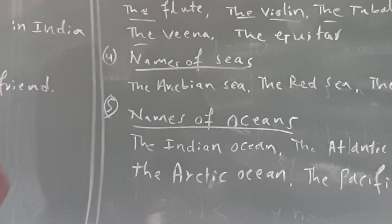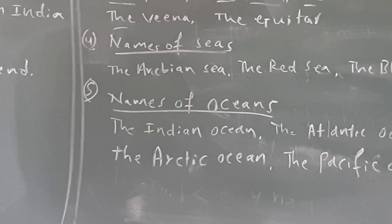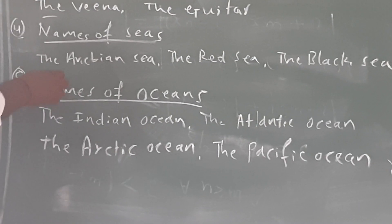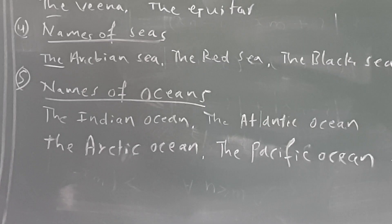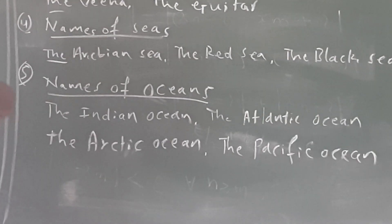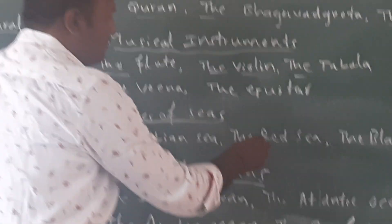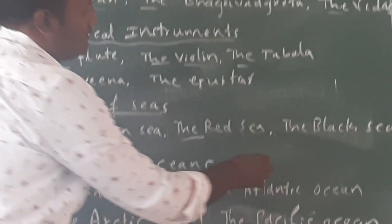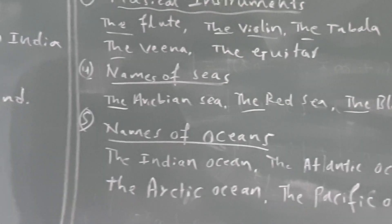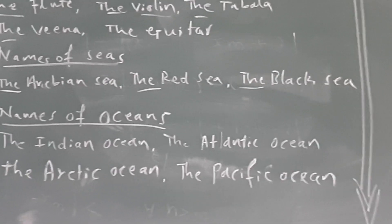Fourth rule: names of seas. Before the names of seas, we use the article 'the'. For example: the Arabian Sea, the Red Sea, the Black Sea. These are famous seas, so before them we use the article.